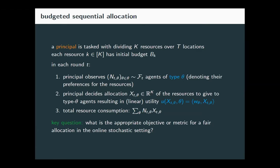We model this as a budgeted sequential allocation problem, where a principal divides K different types of resources over T locations, and every resource has a budget. In every round — corresponding to one location visited — the principal observes demand indicated by N, the agents that arrive. Agents can be of different types, and there's a certain number of agents that arrive, each with a different type.